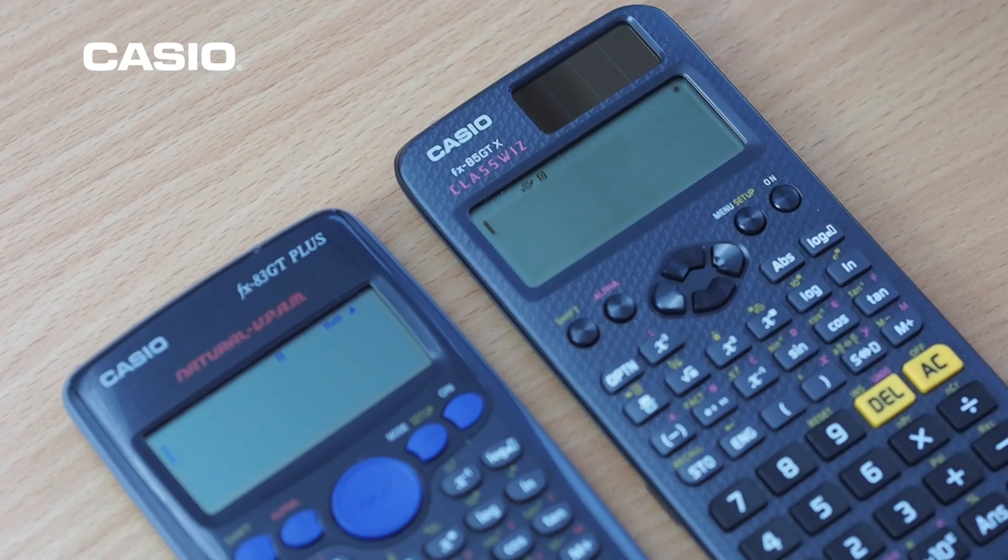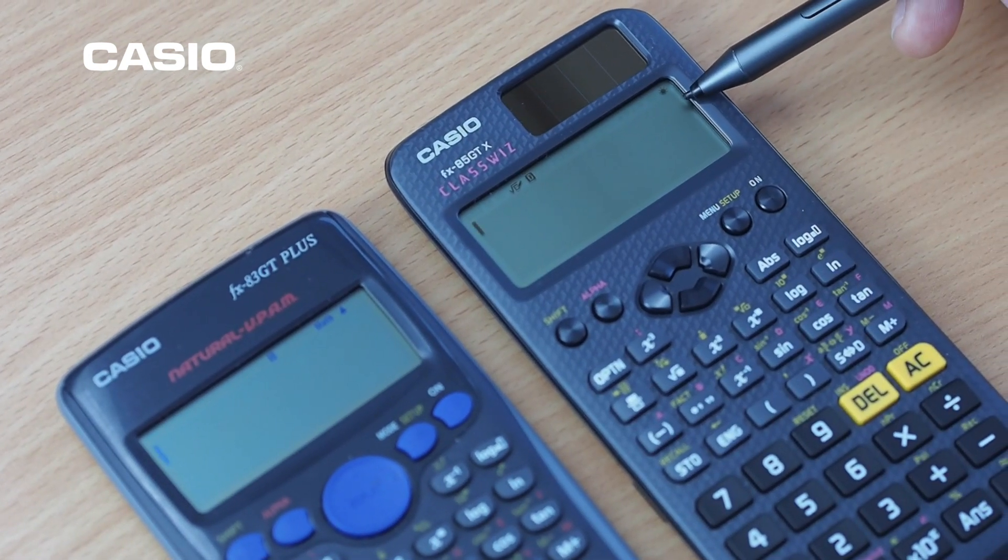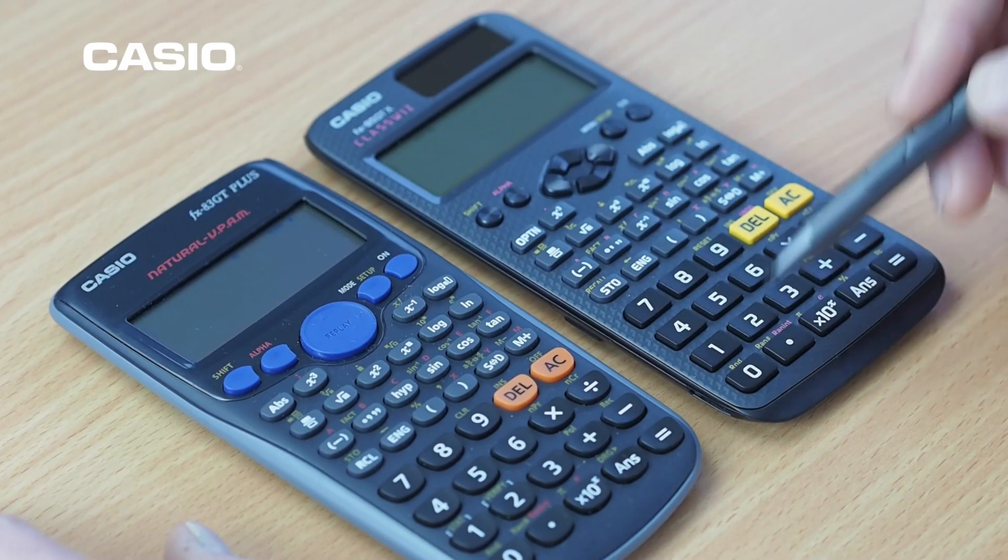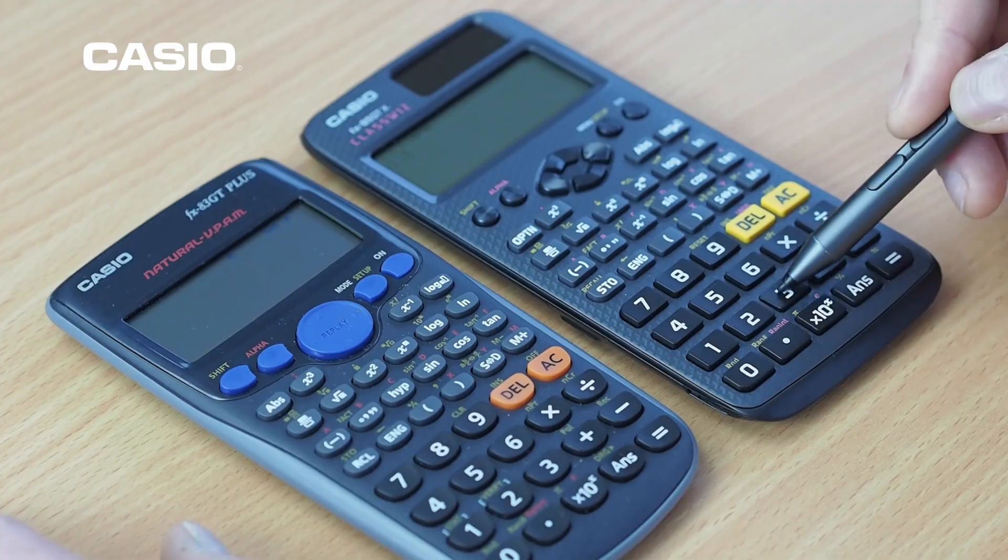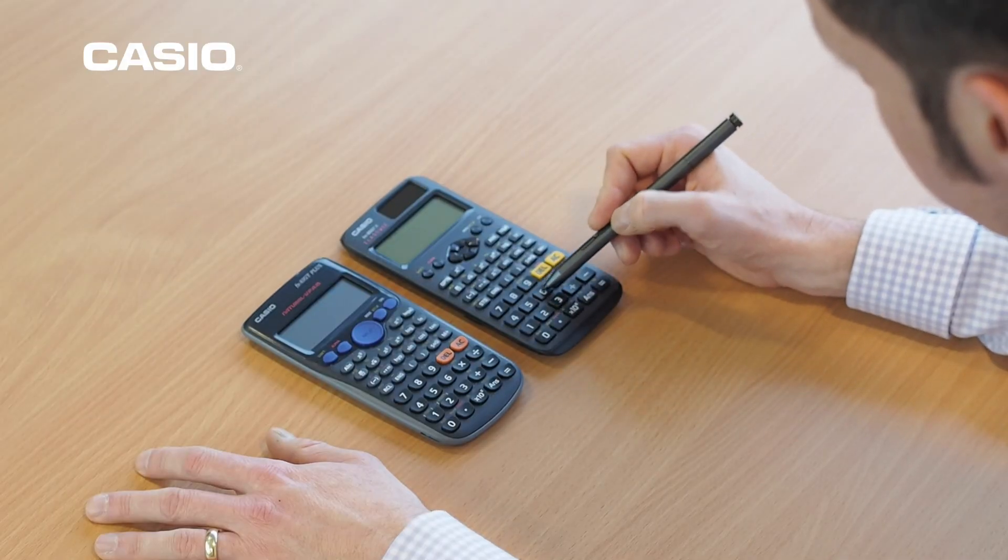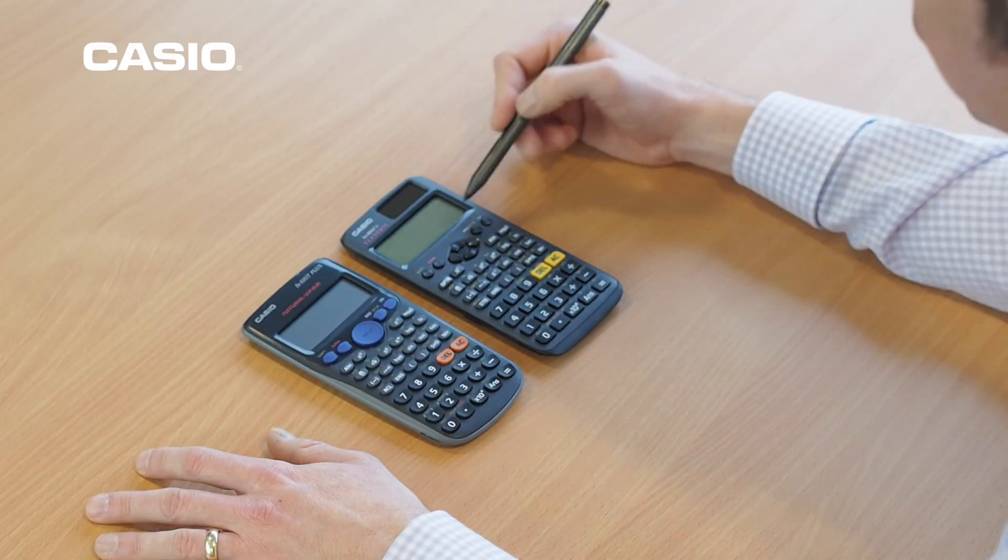So let's go into the main calculate page. What we get on here is a four times higher resolution making things much sharper for your students. So let's try a calculation. We'll have one, two, three times by four, five, six. And here we've got the answer.